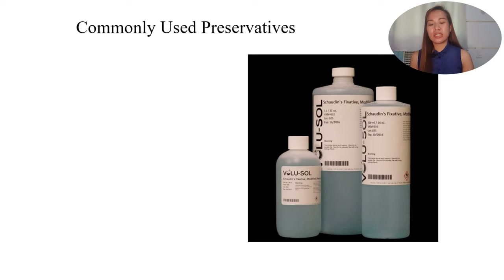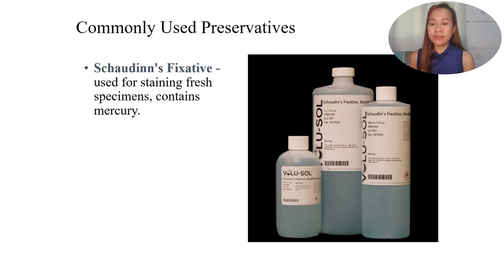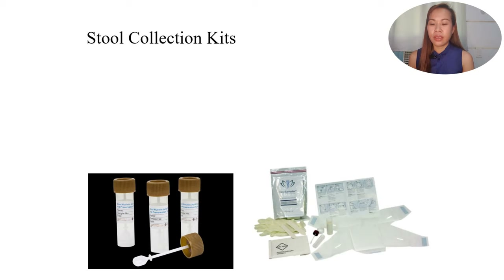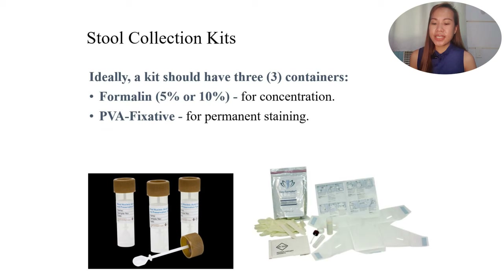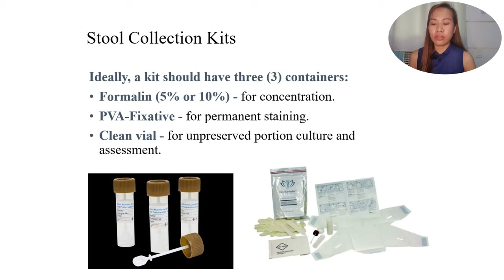Other preservatives include Schaudinn's fixative, used for staining fresh specimens — it contains mercury. 10% buffered formalin is used for concentration only. For stool collection kits, ideally there should be three containers: one with 5-10% formalin for concentration, one with PVA fixative for permanent staining, and a clean vial for unpreserved portions for culture and assessment. Gloves and other materials are also needed. When selecting a kit, consider vial size for adequate sample volume, child-proof design, a stirrer or scoop for mixing, and proper labeling indicating the presence of poison in several languages.